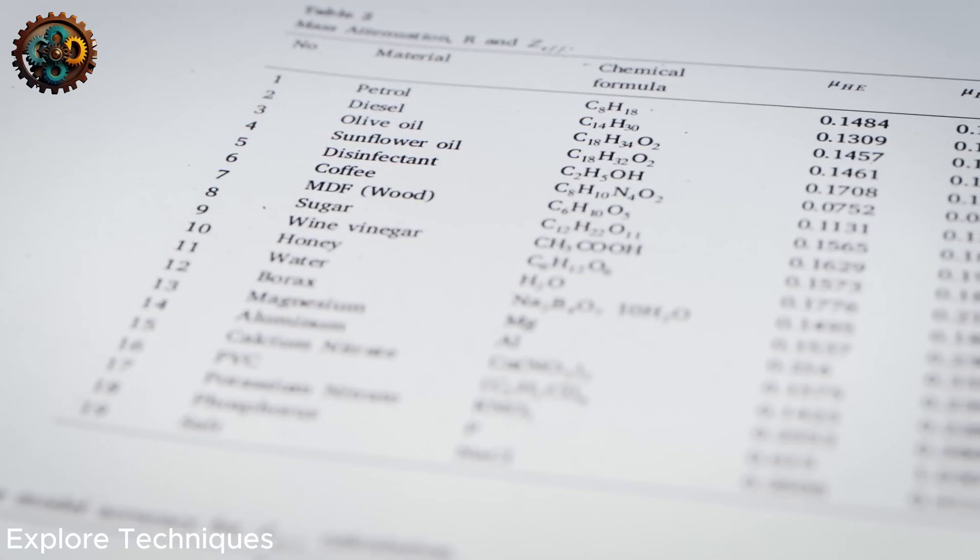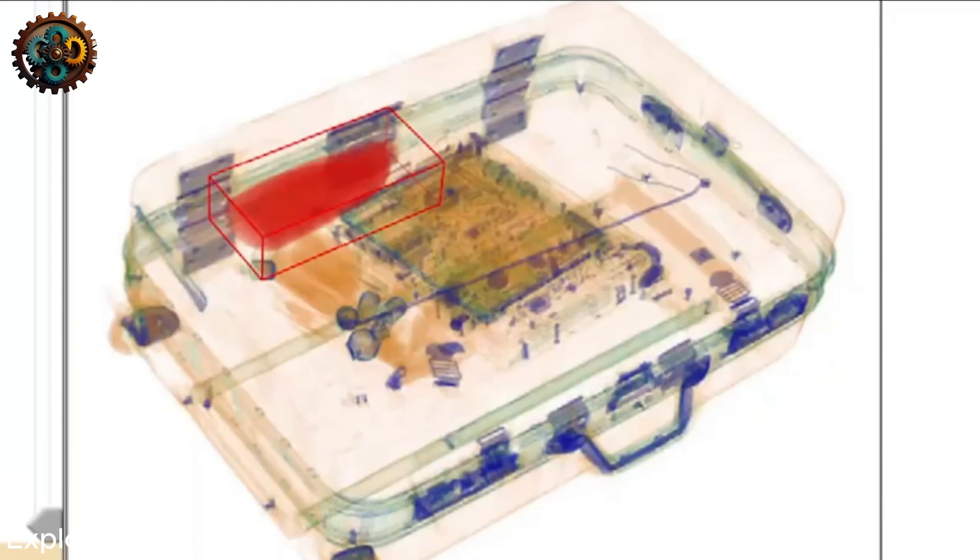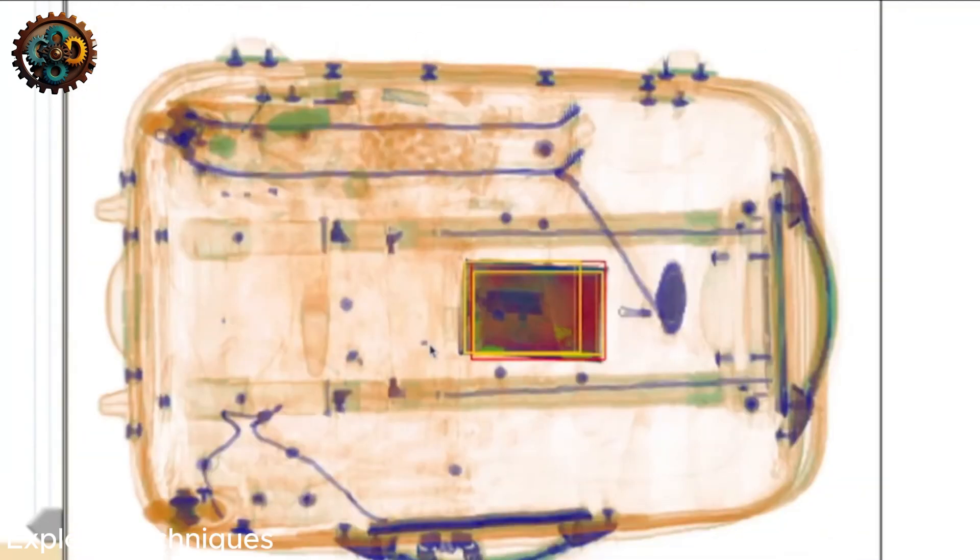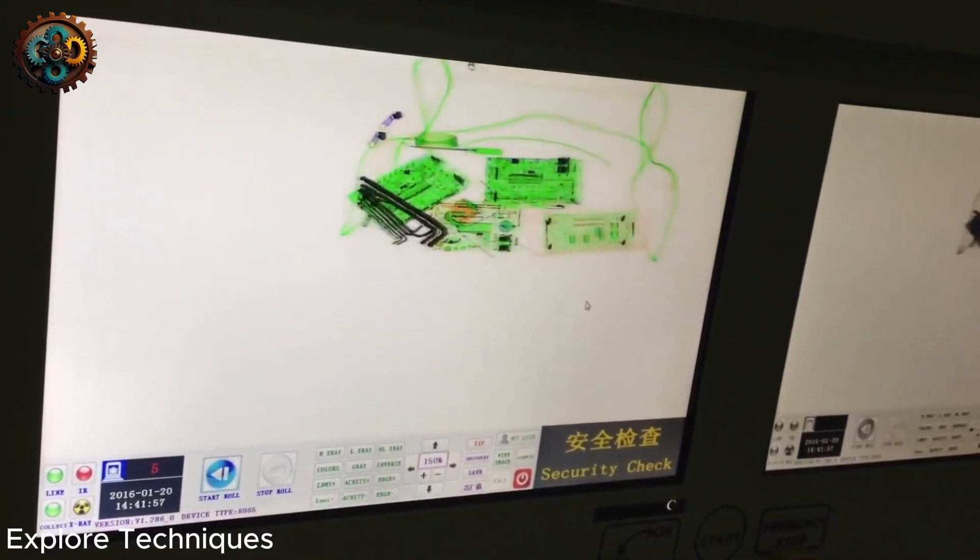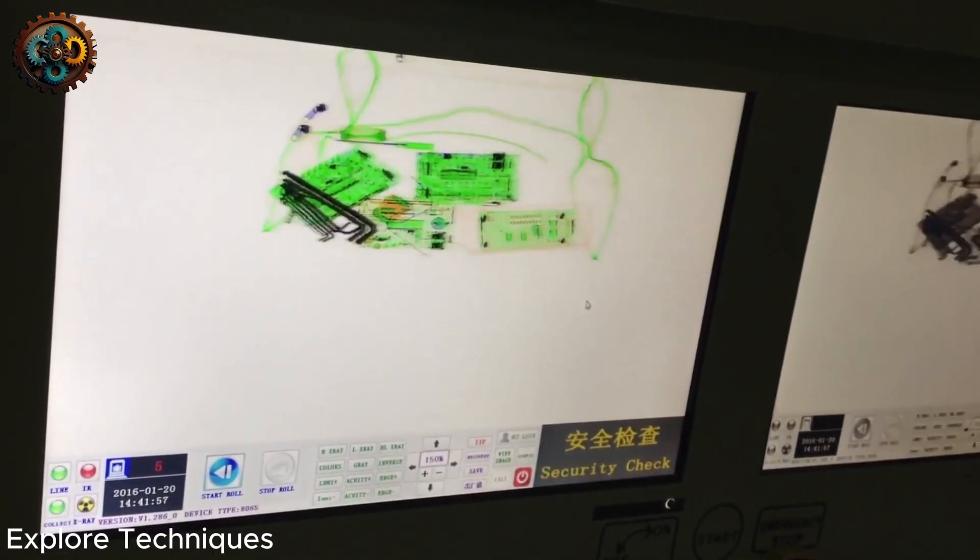You can simply think of it as atomic numbers, or effective zed, grouped together. And if you fall within certain bands, you will be classified as organic and colored orange. Mixed materials will be green, and highly absorbent materials will be blue. This is the first step.